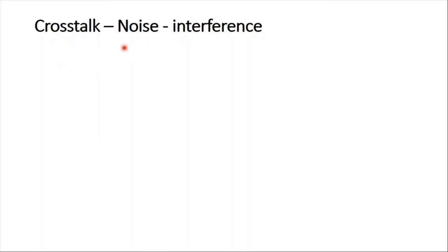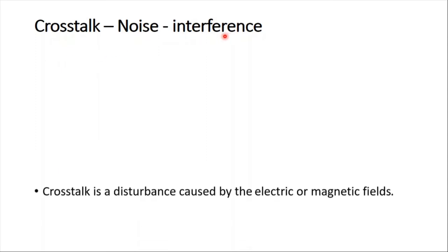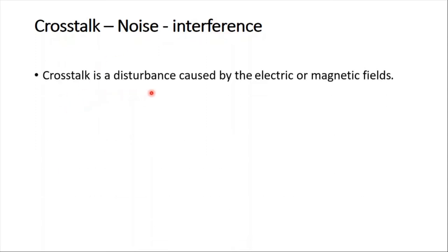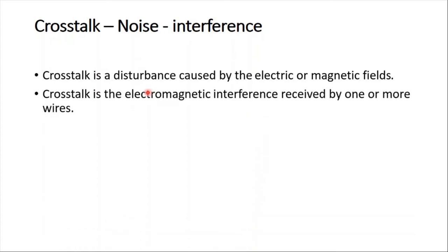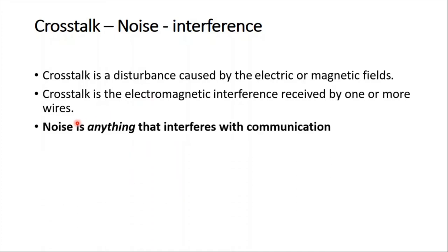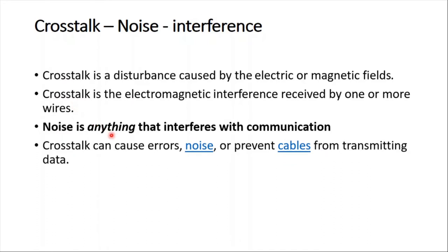Let's start with crosstalk and its relation with noise and interference. Crosstalk is a disturbance caused by electric and magnetic fields. It is the electromagnetic interference received by one or more wires. Noise is anything that interferes with communication, and one reason behind noise is crosstalk. Crosstalk can cause errors, cause noise, and prevent cables from transmitting data.